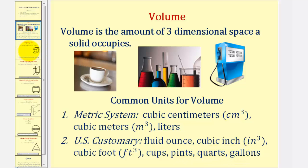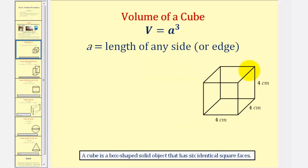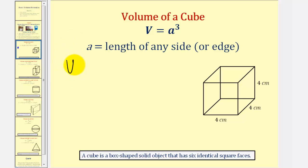For our first example, let's find the volume of a cube pictured here, where a cube is a box-shaped solid object that has six identical square faces. Notice here we have six faces that are all four centimeters by four centimeters. The volume is equal to a cubed, where a is the length of any side or edge. So the volume is equal to four centimeters cubed.